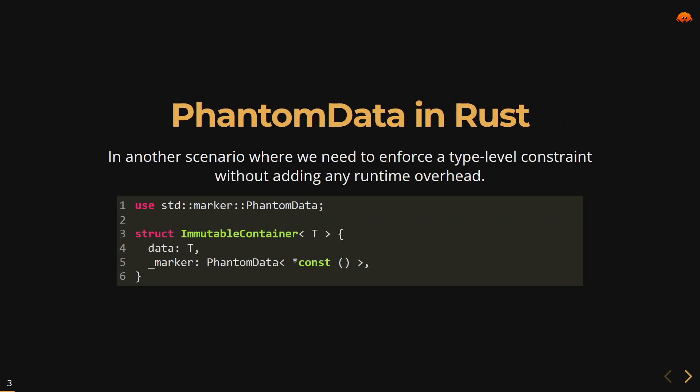In another scenario where we need to enforce type-level constraints without adding any runtime overhead, an ImmutableContainer holds data of type T and the marker field of type PhantomData ensures that ImmutableContainer is invariant over its type parameter T, preventing any variance with respect to T.